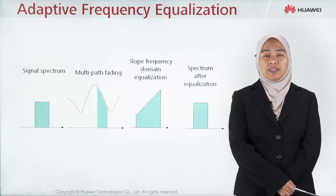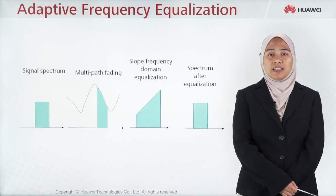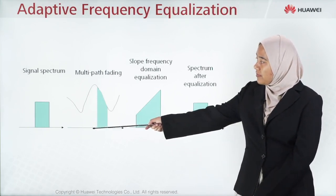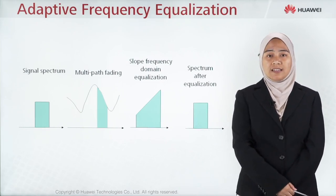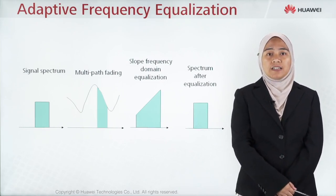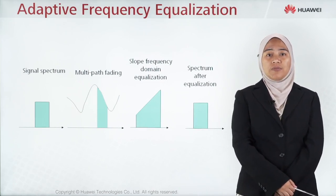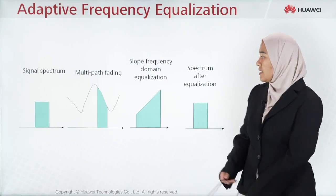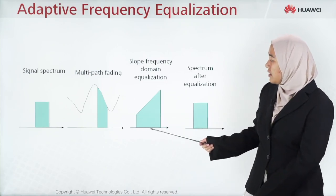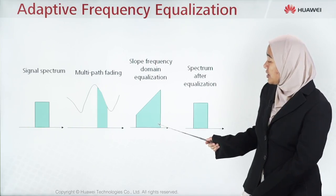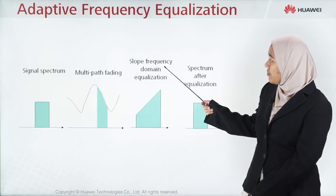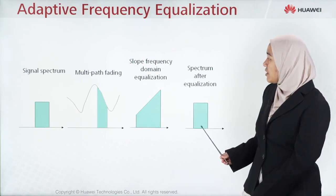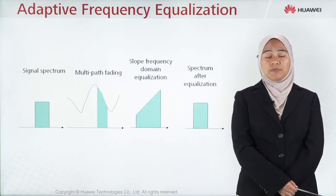First is adaptive frequency equalization, which is related with the device. As shown in this figure, the signal spectrum transmitted is a standard signal spectrum. After transmission, it encounters interference and multipath fading, causing distortion. So after receiving this distorted signal, using slope frequency domain equalization, the spectrum after equalization can be restored to the original transmitted signal spectrum.